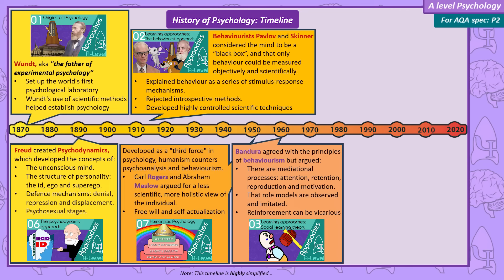Instead, they argue humans have free will in deciding how to act. They also thought psychology is too focused on mental illness, and instead created a psychology that explains how to become the best version of yourself — what they called achieving self-actualisation.